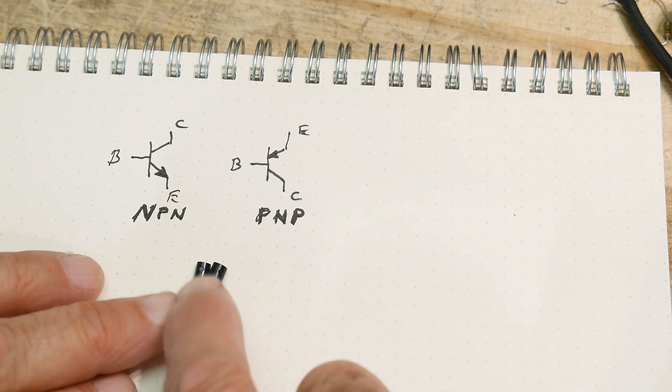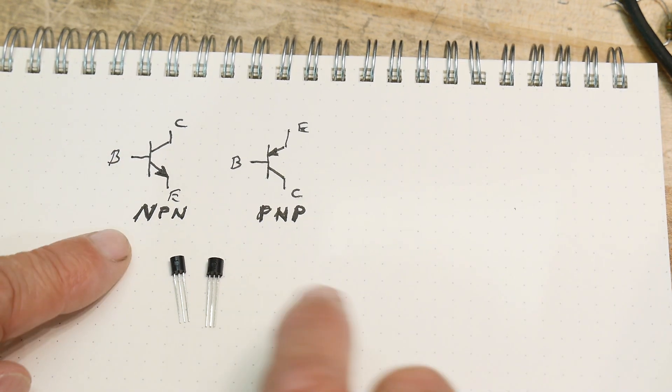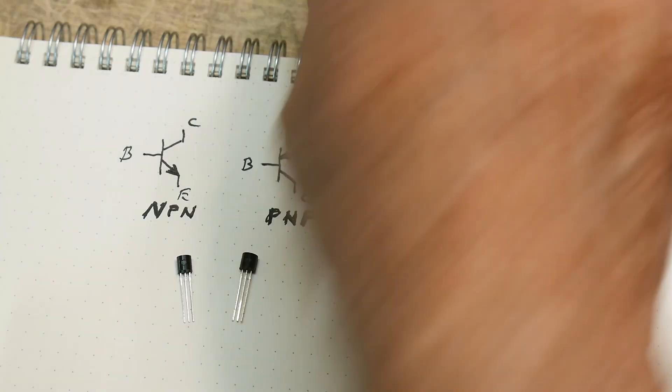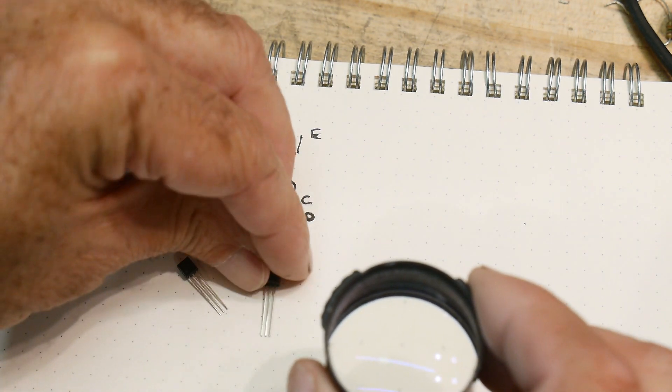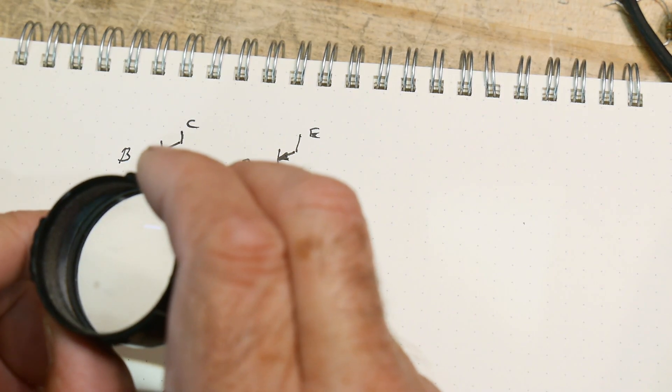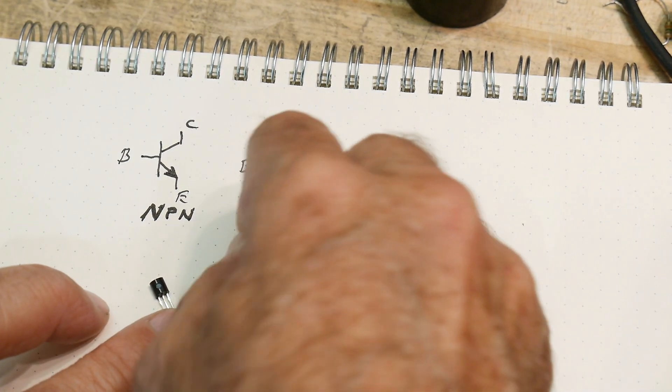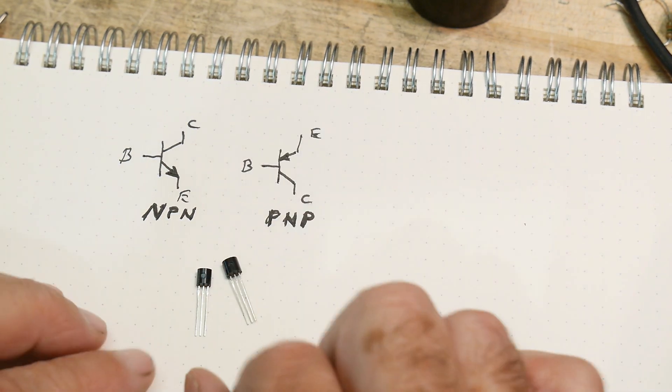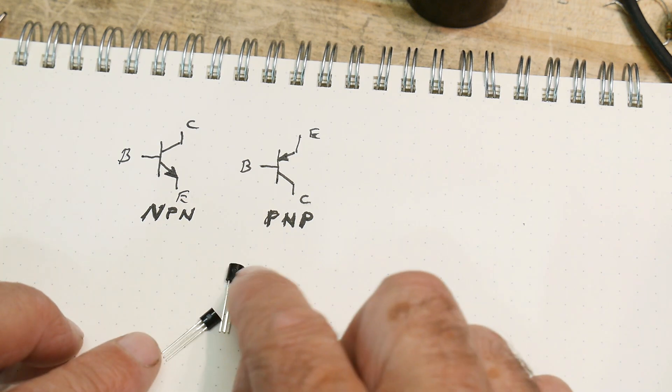Alright, and we have two transistors, and we want to know if they're an NPN type or a PNP type. And we could get out a magnifying glass and we could read the part number.